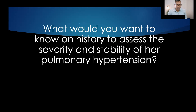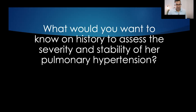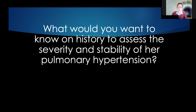What would you want to know on history to assess the severity and stability of her pulmonary hypertension? I'd like to know when this was diagnosed and when she first became symptomatic, especially in terms of shortness of breath. I want to know the cause of the diagnosis — autoimmune pulmonary arterial hypertension, OSA-related, or other conditions such as left heart dysfunction. I'd like to know her symptoms at diagnosis and now, particularly shortness of breath on exertion or symptoms related to right ventricular dysfunction.